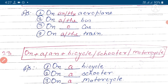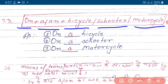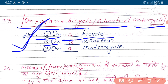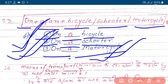Ek aur structure: on ke baad a ya n ka yuj karenge - kab? Jab in ke baad bicycle, scooter, ya motorcycle hoga. Ek example hai: 'on a bicycle' - yoh is structure ko follow kerta hai. 'On a scooter' - ye bhi structure ko follow kerta hai. 'On a motorcycle' - ye bhi structure ko follow kerta hai.